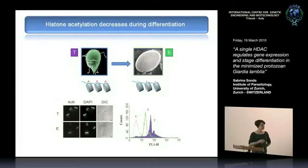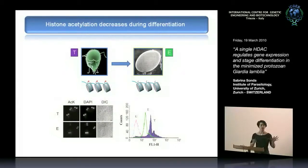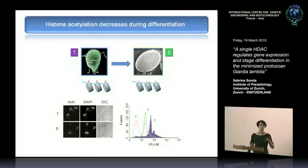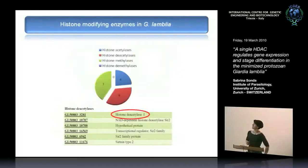What we did was straightforward. First, we tested whether Giardia is actually capable of acetylating its histones and whether the acetylation level changes during stage differentiation. The purple represents trophozoites and the green represents encysting cells. Both by FACS quantitative analysis and immunofluorescence, it was clear that the level of acetylation decreases during encystation — which makes sense considering the cyst is a quiescent form that does not need many genes to be transcribed.